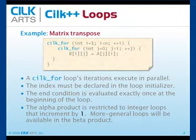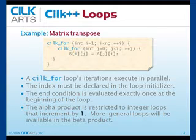The second restriction is that the end condition is evaluated exactly once at the beginning of the loop. So if in your original for-loop you are evaluating the end condition each time through, that won't necessarily give the same result. For typical FORTRAN-style loops that's fine, but for something more like a while-loop use, it wouldn't be an appropriate candidate for SILK4.